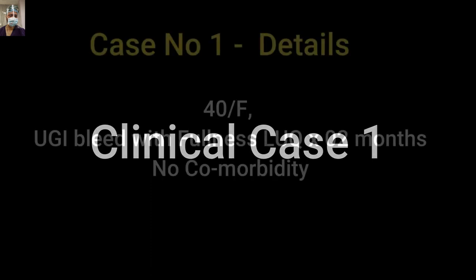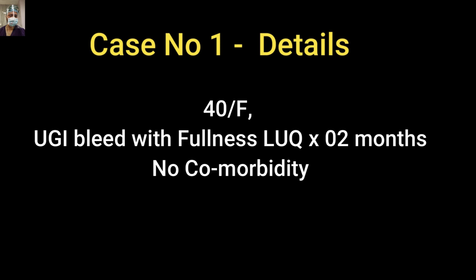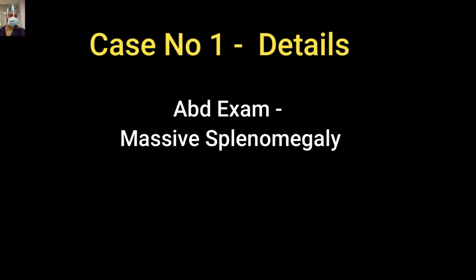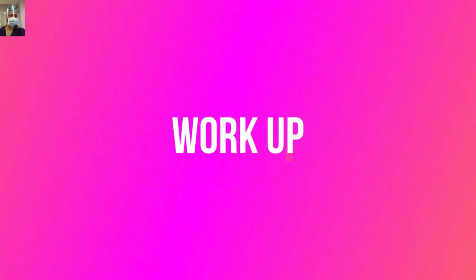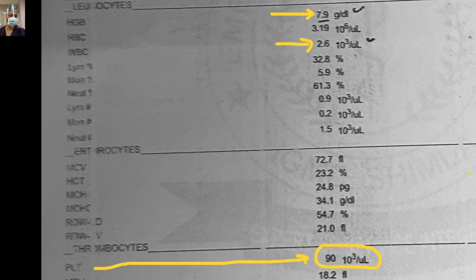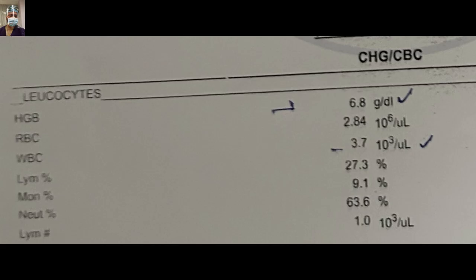As in all my videos, I will give you a clinical case scenario so you can correlate theoretical discussion with practical life. We had a 40-year-old female who presented with history of upper GI bleed in the form of hematemesis and melena, with fullness in the left upper quadrant for the last two months. There was no other comorbidity. On abdominal examination there was massive splenomegaly. She was anemic with Hb 7.9, WBC count 2600 (normal above 7000–11000), and platelet count 90,000 (normal above 1.5 lakhs). Multiple reports of CBC showed low Hb.